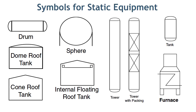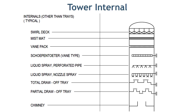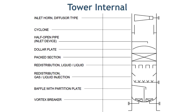There are two types of towers shown here: one with column internals and the other without. Different types of internals are used in the column, each with different symbols — such as mist mat, pipe distributor, liquid spray distributor, and trays. On the bottom part of the column, you can also see the vortex breaker, baffle plate, packing bed, and other types of trays.